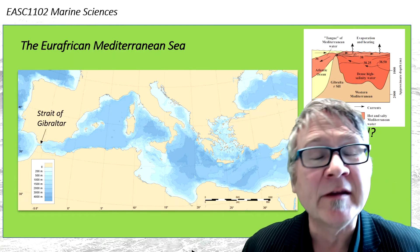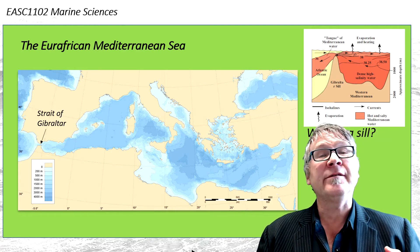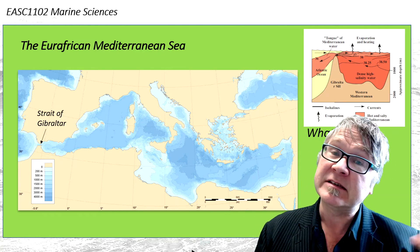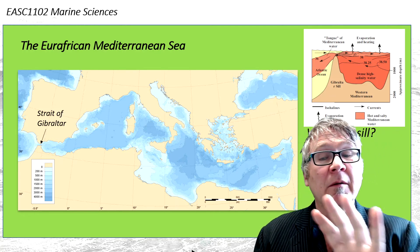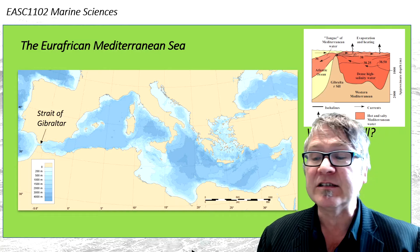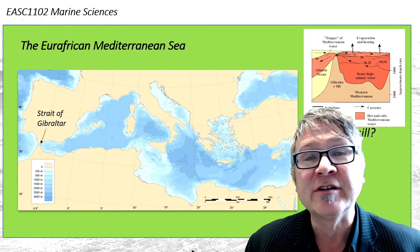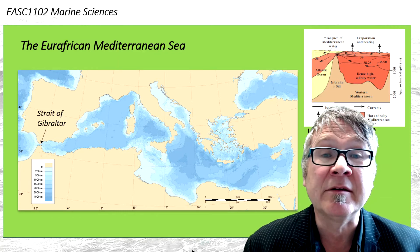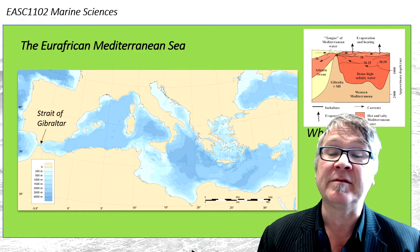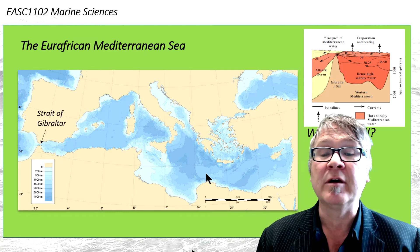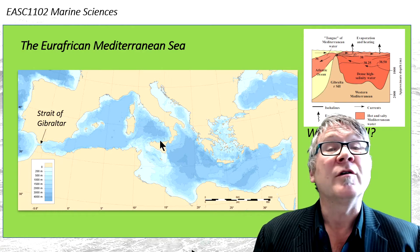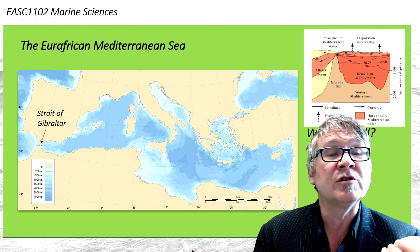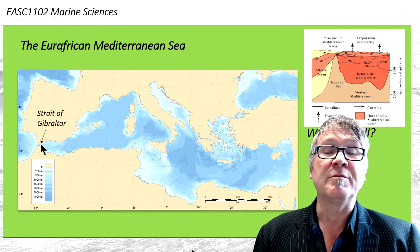Here we have the Mediterranean Sea, technically called the Eurafrican Mediterranean Sea because there are other Mediterranean Seas. This large map shows the depth distribution, where the darkest blue colors indicate water depths exceeding 4,000 meters — as deep as the ambient Atlantic Ocean. You can see deeper basins in this region, and the connection with the Atlantic Ocean is a very narrow, relatively shallow strait known as the Strait of Gibraltar.